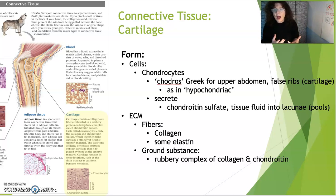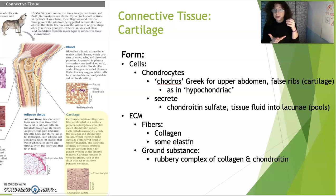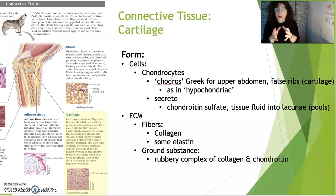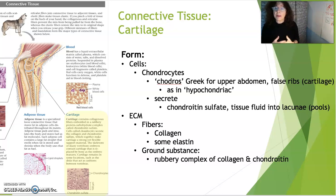When we go into the form of cartilage, we think about the cells that make up the cartilage and the extracellular matrix — those are the two hallmarks for connective tissue. We're going to look into the cells first. Those cells are known as chondrocytes, and I'm going to give you a mnemonic that might help you remember that.